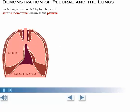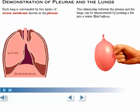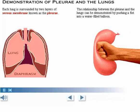Each lung is surrounded by two layers of serous membrane known as the pleura. The relationship between the pleura and the lungs can be demonstrated by pushing a fist into a water-filled balloon. The balloon represents the pleura and the fist represents the lung. As the fist pushes into the balloon, notice how the balloon wraps around it and the opposite surfaces of the balloon almost touch.